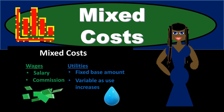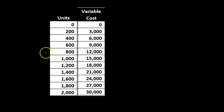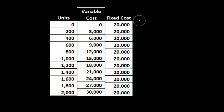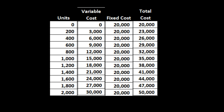Variable costs, like materials, go up with production level and down with production level. Fixed costs, like rent, won't go up or down with production level. So as units of production increase, variable costs such as direct materials go up, while fixed costs like rent stay the same — for example, that $20,000.